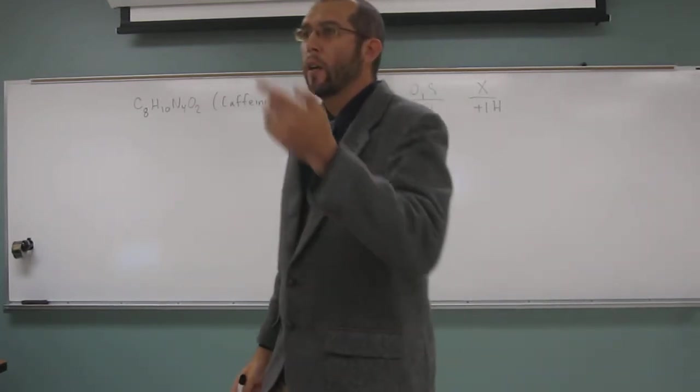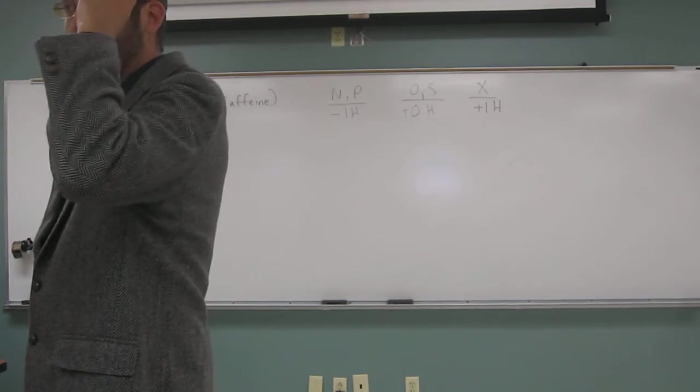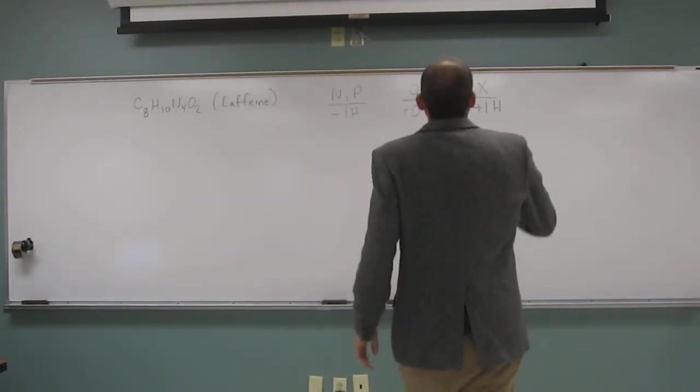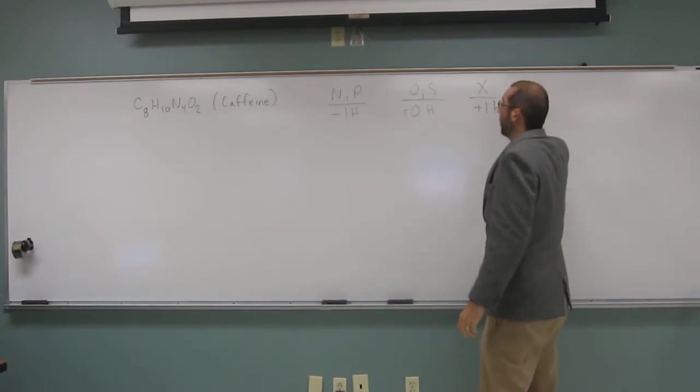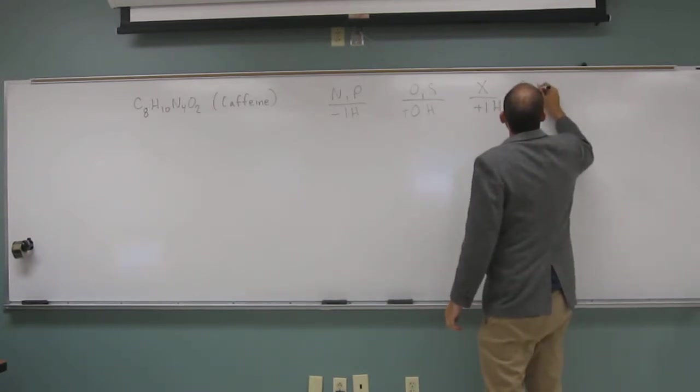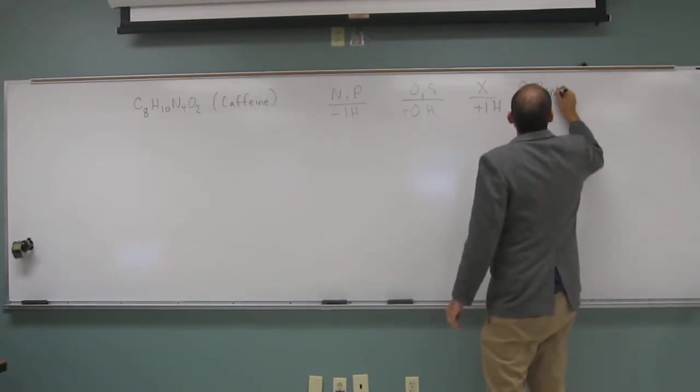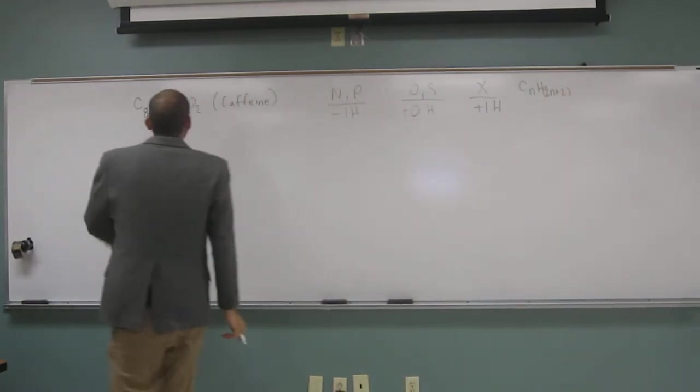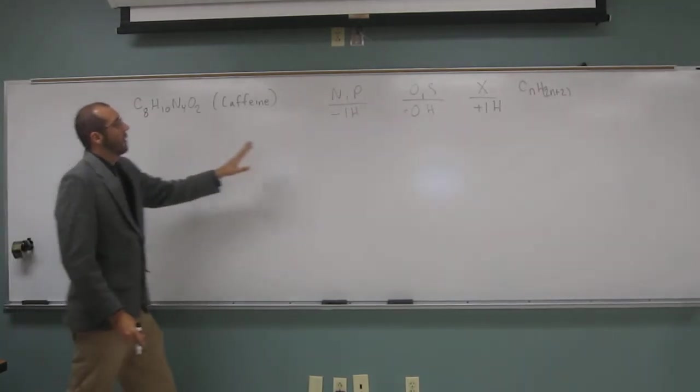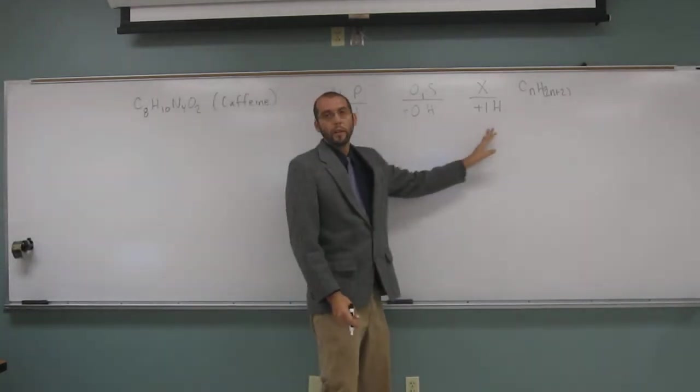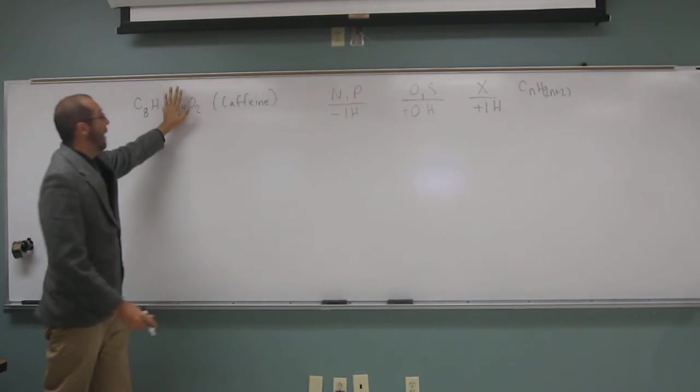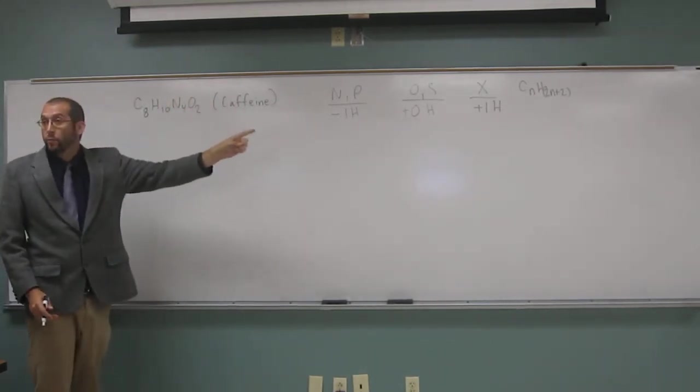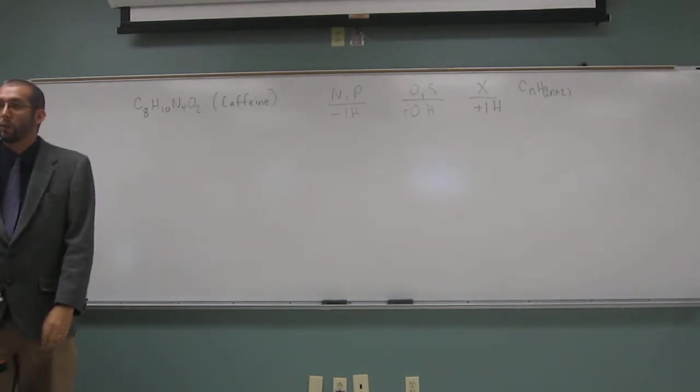And you recall the formula for unsaturated alkane, right? What is that? 2N plus 2. Yeah, so CnH2N plus 2. Like that. So, what we're going to do here is use these rules, take these atoms off, add and subtract those atoms, and then use that CnH2N plus 2 rule.